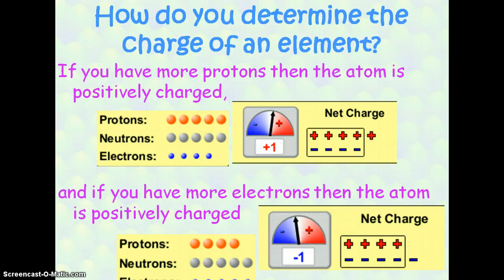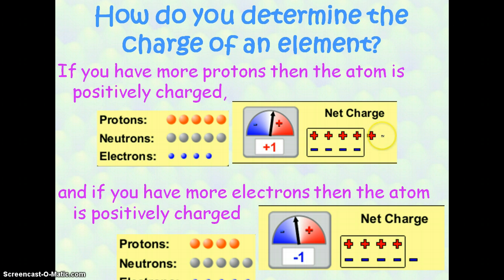If you have more protons than electrons, then you're going to have a positive atom. In this first diagram, you see that we have five protons, five neutrons, and four electrons. We have one more proton than electron, so we have a positive one charge. If we have more electrons than protons, then we have more negatives than positives, so we're going to have an overall negative charge. Now we have four protons, five neutrons, and five electrons. That means we have one more negative than positive, so we have an overall negative one charge.